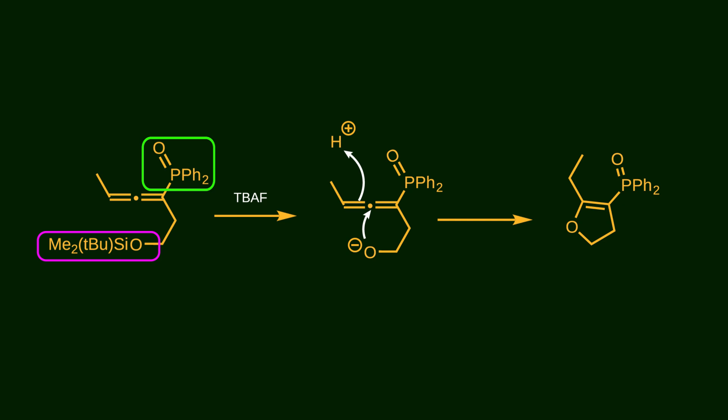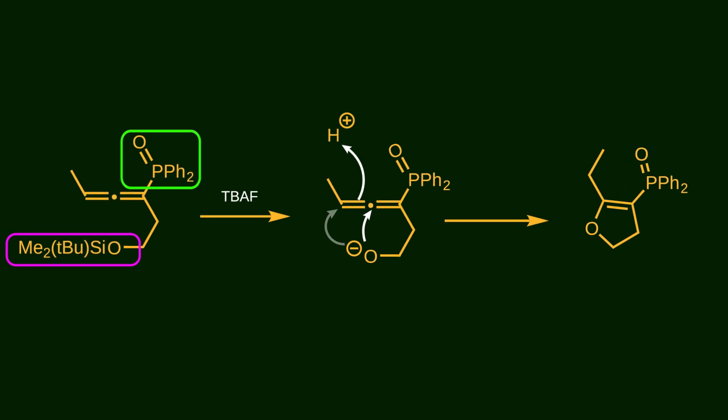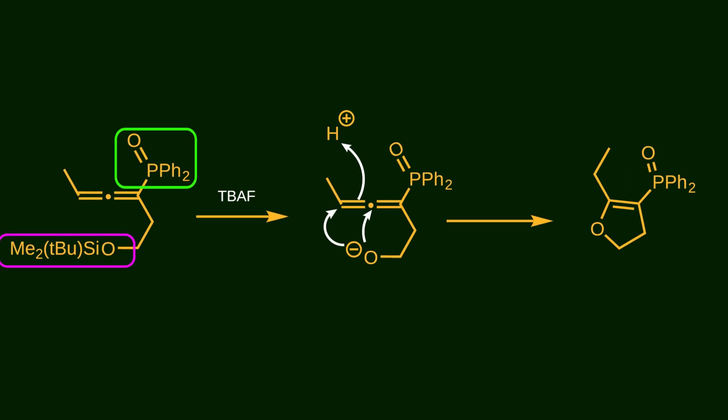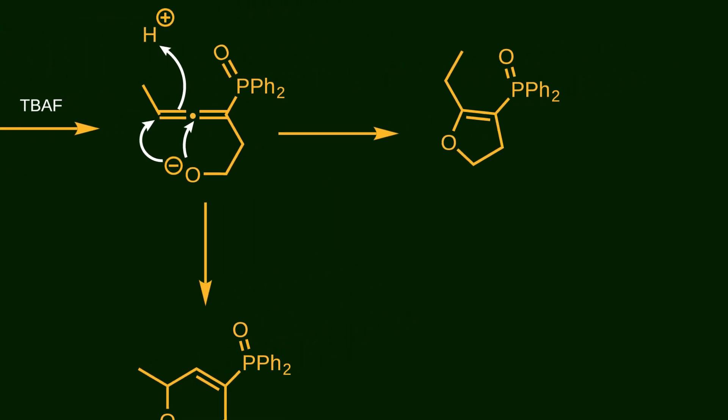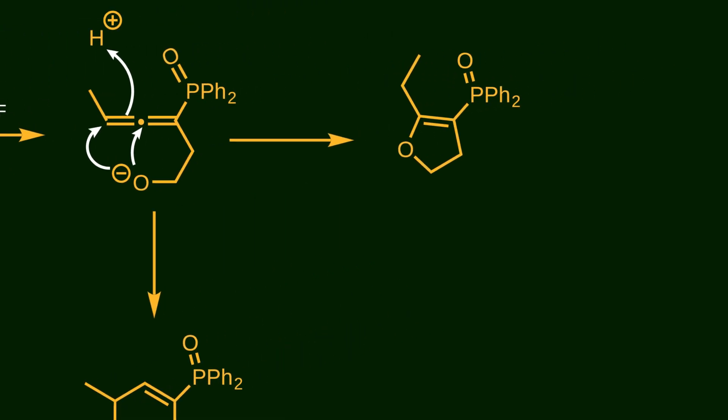This is an excellent example of regioselectivity. Note that the nucleophile could also attack a terminal carbon to form a 6-membered ring, which is thermodynamically more stable than a 5-membered ring. However, the reaction preferentially forms a 5-membered ring, highlighting how substituents on the allene dictate the reactivity pattern.